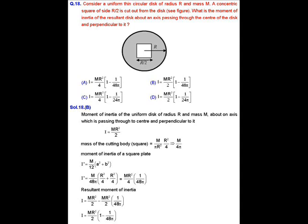MCQ question number 18. We have a uniform thin circular disk of radius R and mass M. A concentric square plate of side R/2 is cut out from the disk, as shown in the figure. We need to find the moment of inertia of the resultant disk about an axis passing through the center of the disk and perpendicular to it.